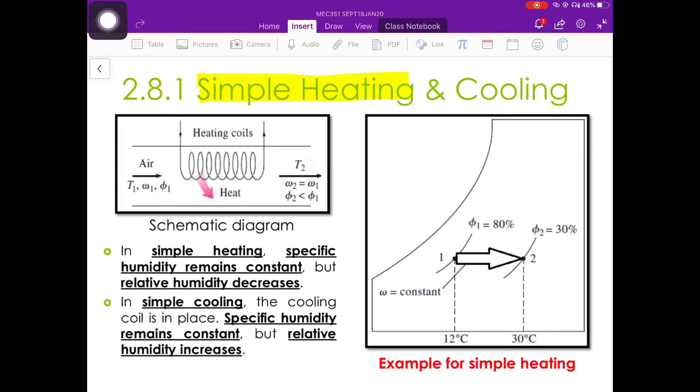Let's have a look at simple heating. In simple heating, the specific humidity will remain constant. However, the relative humidity, omega, will decrease.